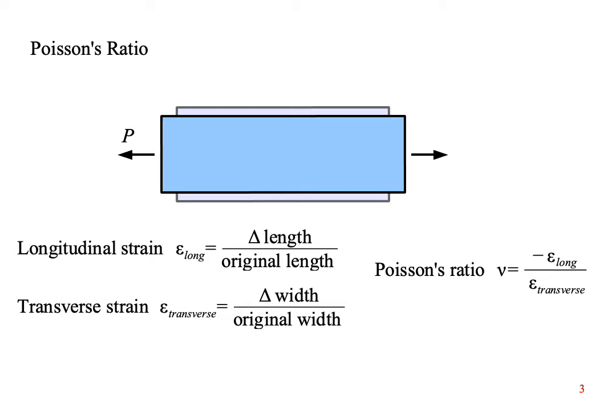If this part were a rod, we would define transverse strain as the change in diameter divided by the initial diameter. Since the width or diameter shrinks when you pull on the bar, the change in width or diameter is a negative number.